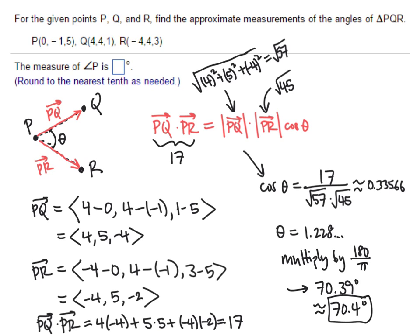So the strategy here is we're going to find our two vectors by subtracting the coordinates of the points. Then we take the dot product of the two vectors. We find the magnitude of the two vectors. We solve for the cosine of theta. We take the inverse cosine and then convert to degrees.